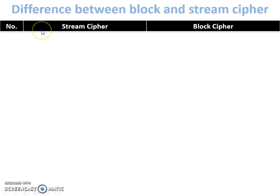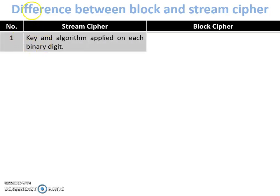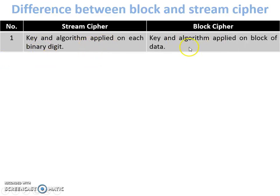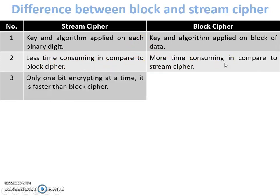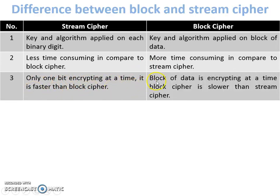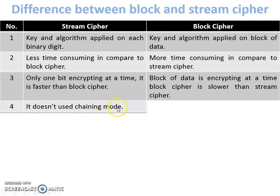Now the difference between block cipher and stream cipher. First: in stream cipher, key and algorithm are applied to each binary digit, working one digit at a time; in block cipher, it works on one block at a time. Second: stream cipher is less time consuming compared to block cipher, which is more time consuming. Only one bit is encrypted at a time in stream cipher, so it is faster. In block cipher, a block of data is encrypted at a time — it is slower because the whole plain text is first divided into fixed size blocks before encryption starts. Stream cipher does not use chaining mode; block cipher does.